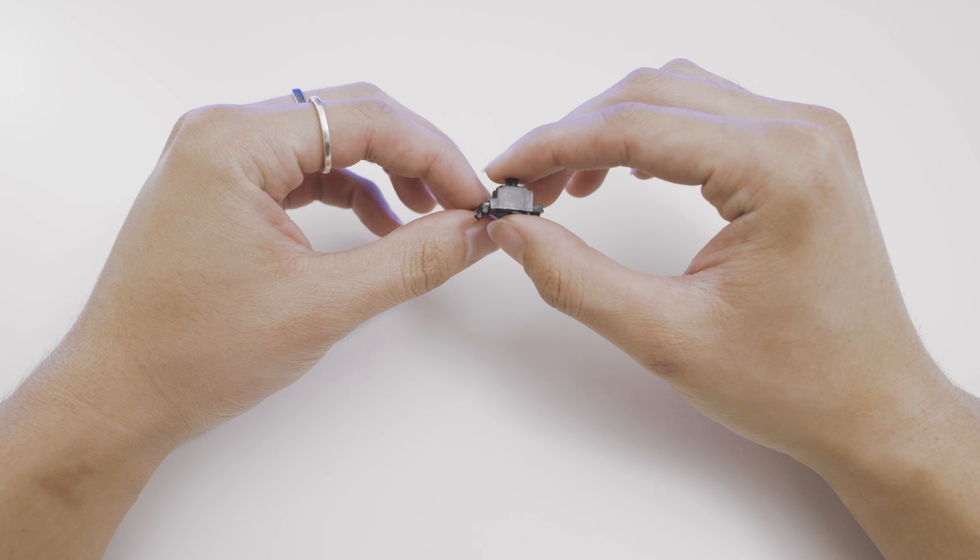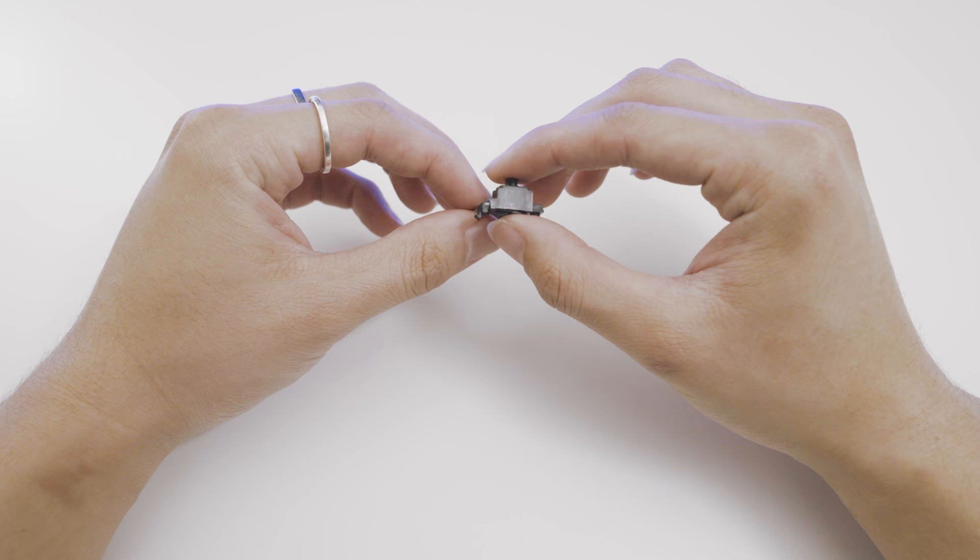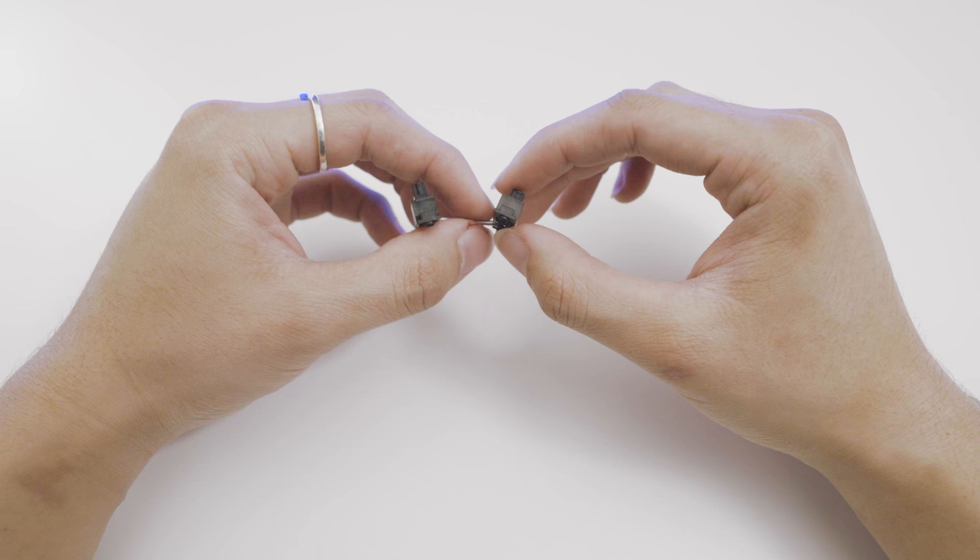For the purpose of this video, I will be using GMK screw-in stabilizers, which are my personal preference when building MX-style boards. The first thing we'll talk about is lubing and clipping the stabilizer.